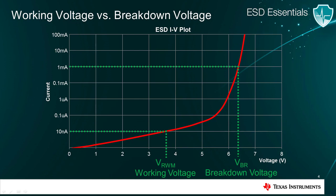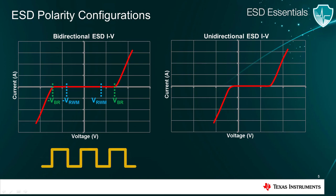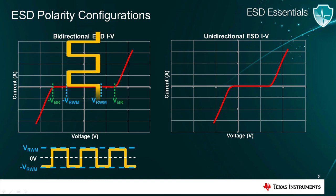By having this margin between working voltage and breakdown voltage, we account for variations across temperature and process. ESD diodes typically come in two polarity configurations: bidirectional and unidirectional. Bidirectional diodes usually have a symmetric IV curve with symmetric working and breakdown voltages. Because of this, bidirectional diodes can support signals with a negative and positive range, granted it falls between negative VRWM and positive VRWM.